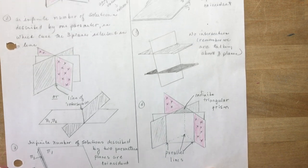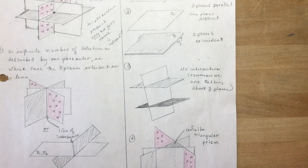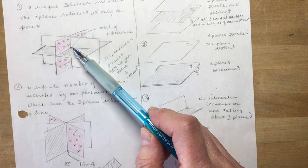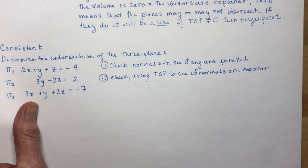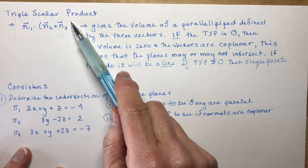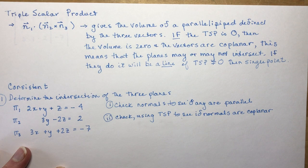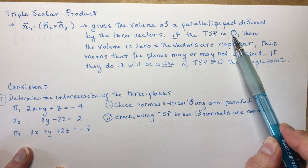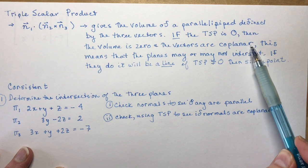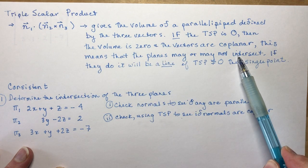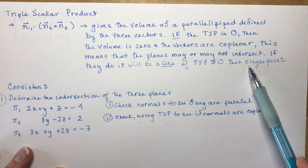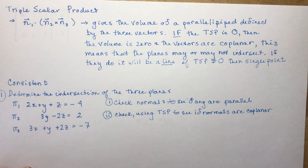So we have the consistent group and the inconsistent group. The first example is going to be consistent number one — how do we find the single point of intersection. The first thing we do is the triple scalar product. It gives the volume of a parallelepiped defined by the three vectors. If the TSP is zero, then the volume is zero and the vectors are coplanar, meaning the planes may or may not intersect — and if they do, it will be a line. If the TSP is not equal to zero, there will be a single point of intersection.